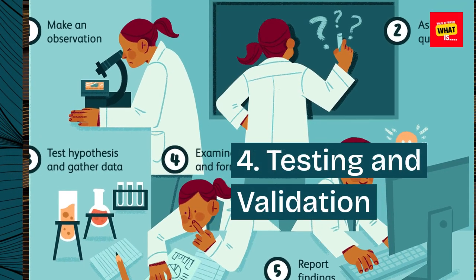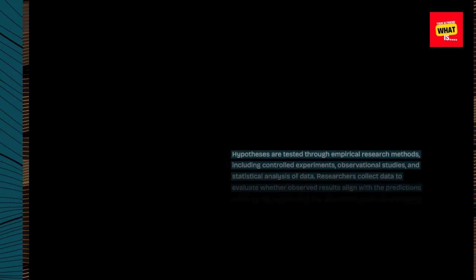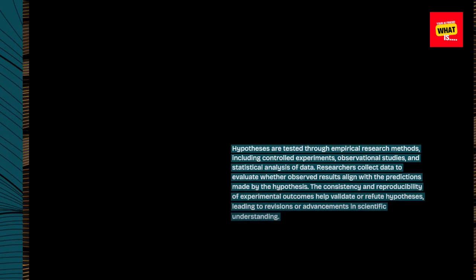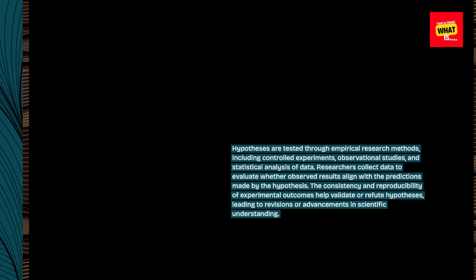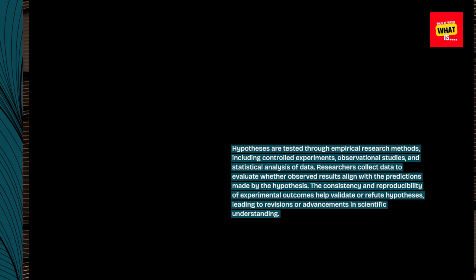4. Testing and Validation. Hypotheses are tested through empirical research methods, including controlled experiments, observational studies, and statistical analysis of data. Researchers collect data to evaluate whether observed results align with the predictions made by the hypothesis. The consistency and reproducibility of experimental outcomes help validate or refute hypotheses, leading to revisions or advancements in scientific understanding.